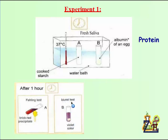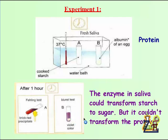Now in tube B this time we did biuret test, and this test is done because we put protein in the tube one hour ago. As we see here the color with biuret test was violet color which means that there is protein. This means that the protein that was put in the tube an hour ago is still present in the tube. It was not transformed into any other substance. Here we can say that the enzyme in saliva could transform starch to sugar but it couldn't transform the protein.